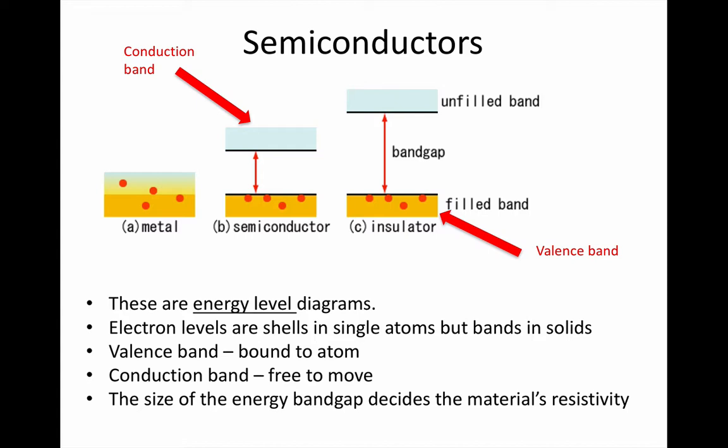In a single atom, the valence shell is the outermost shell. In a solid, the valence band is the outermost energy band of electrons that are still bound to their atoms — they are the ones that would take the least energy to break free. The conduction band indicates the electrons that are free of any individual atoms and able to form an electric current. The size of the gap between the bands in different materials explains the electrical conductivity of conductors, insulators, and semiconductors.